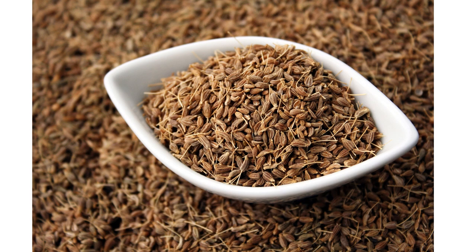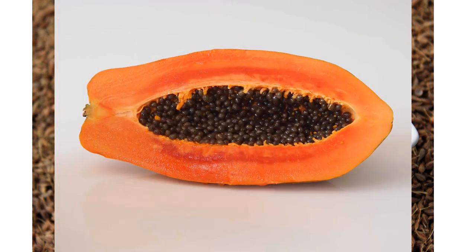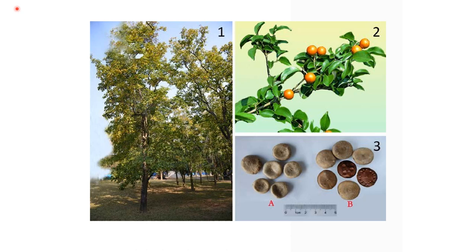We also have medicinal plants whose medicinal properties come from their fruits, such as anise and papaya. Another group are medicinal plants whose medicinal properties mainly come from their seeds. Examples include Nux vomica, or Strychnos nux-vomica, with the whole plant, its fruit, and seeds all being relevant.